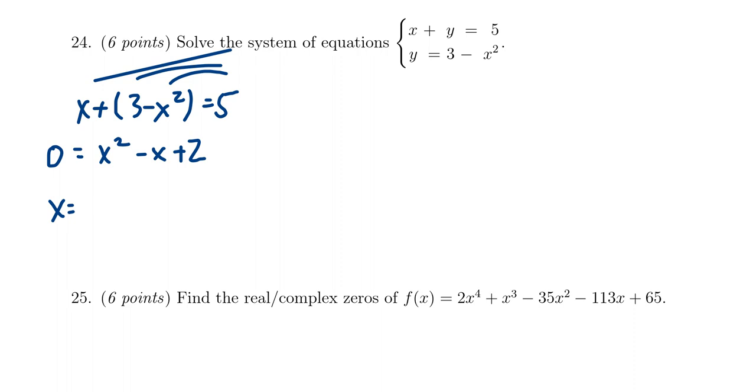x equals negative b. So you get a negative, negative 1 plus 1 there. Plus or minus the square root of b squared, which is 1, minus 4ac. So 4 times 1 times 2 is an 8, all over 2a.